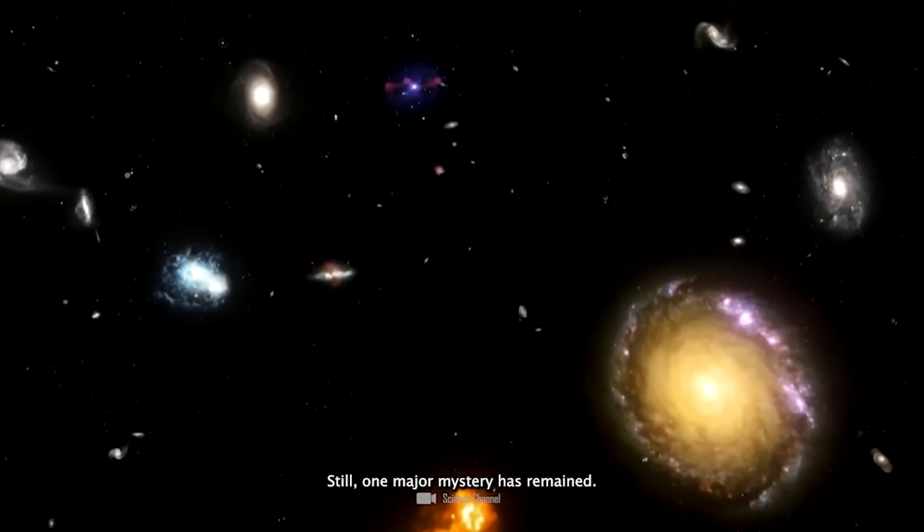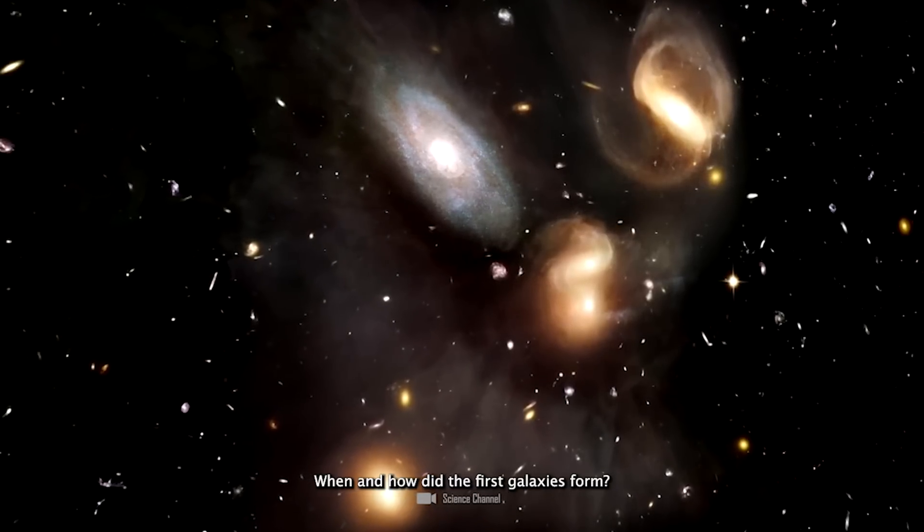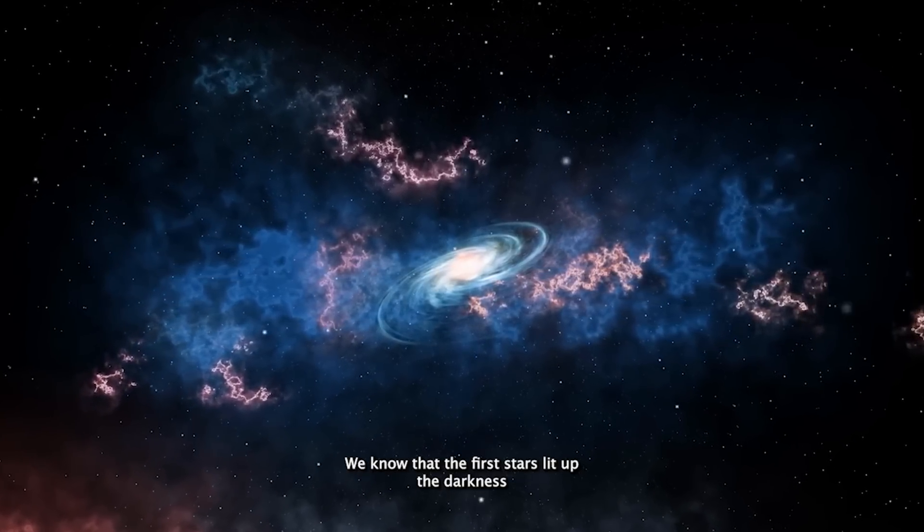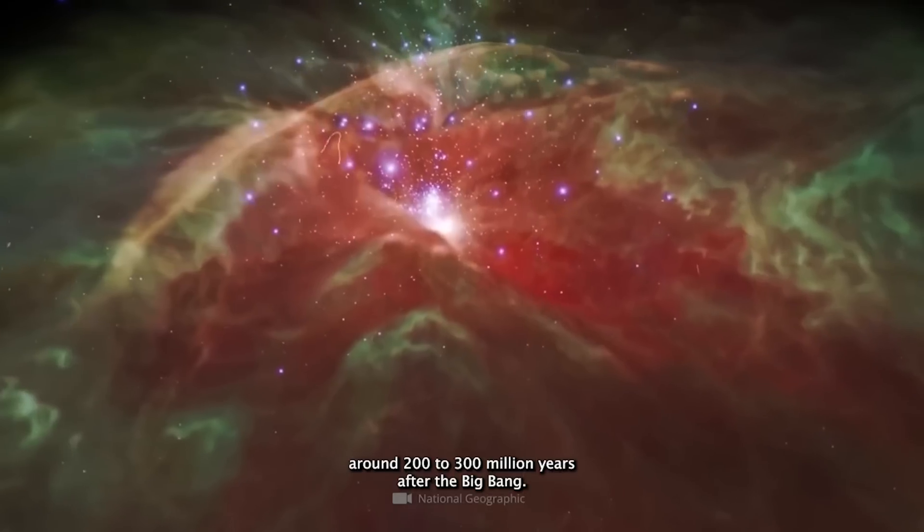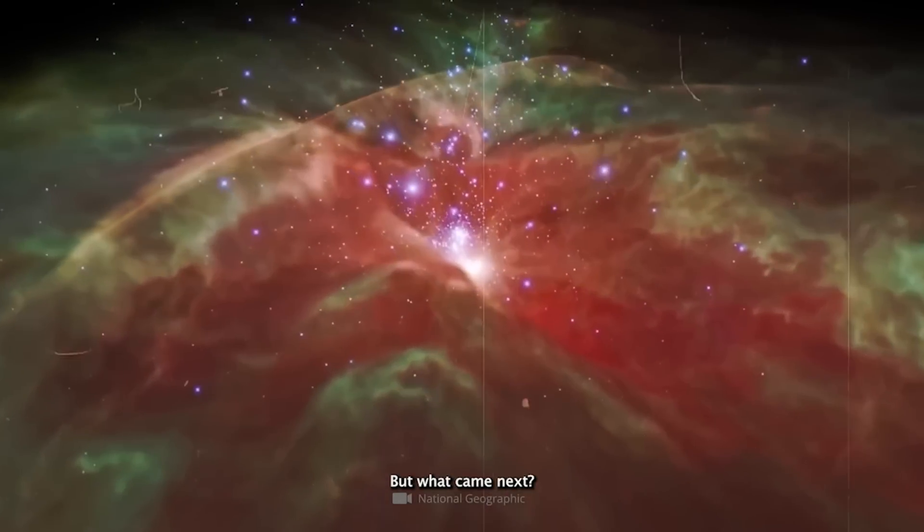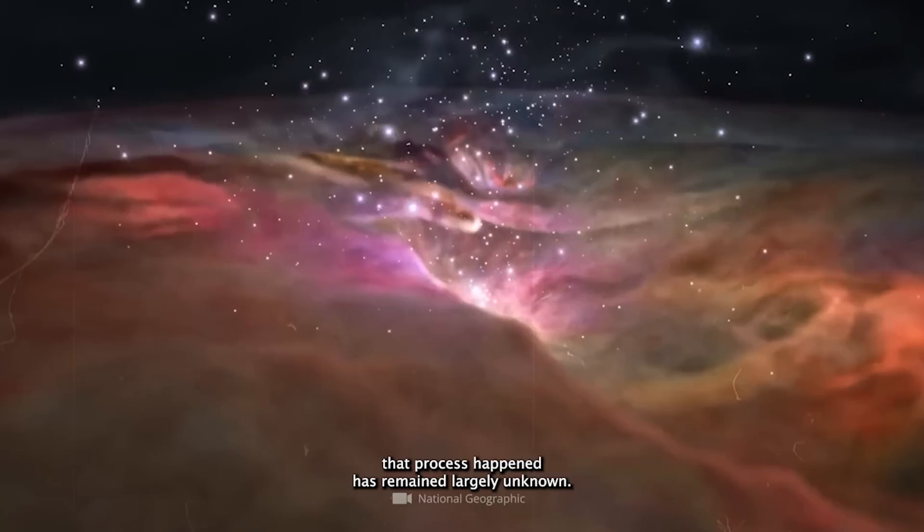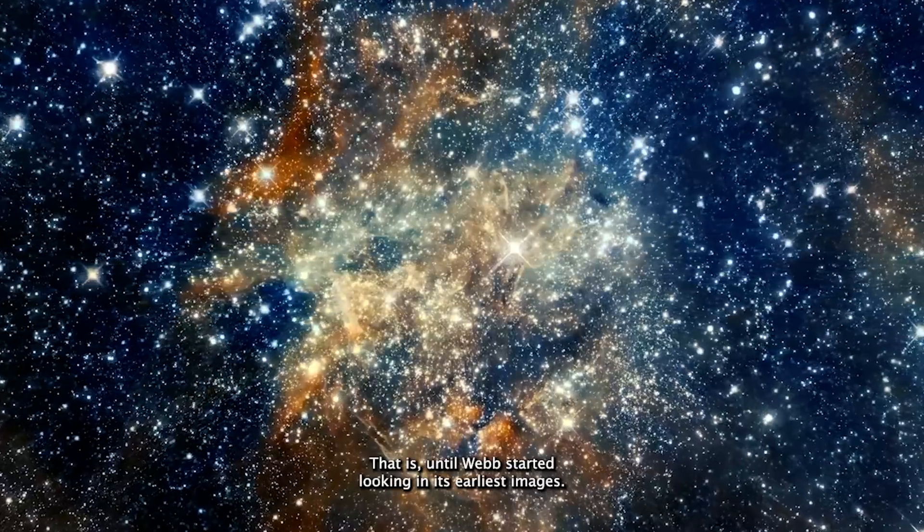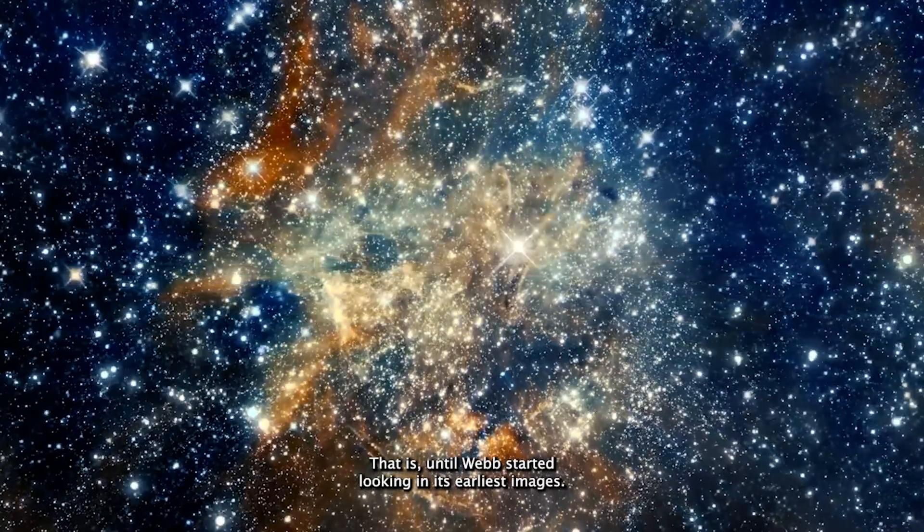Still, one major mystery has remained. When and how did the first galaxies form? We know that the first stars lit up the darkness around 200 to 300 million years after the Big Bang. But what came next? How those stars merged into galaxies and how fast that process happened has remained largely unknown. That is, until Webb started looking.